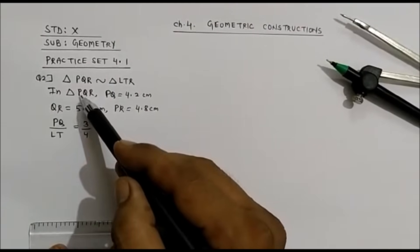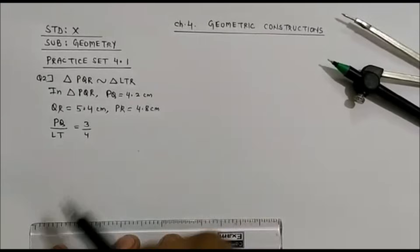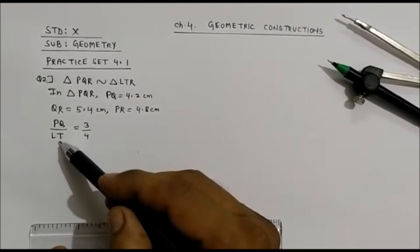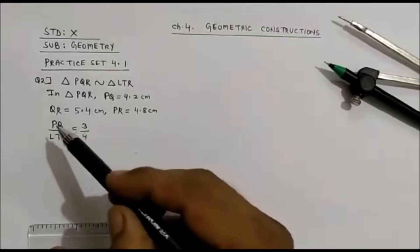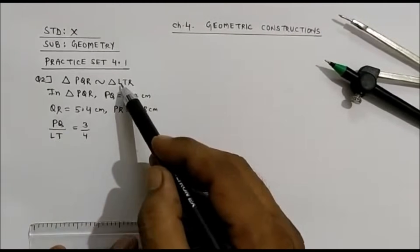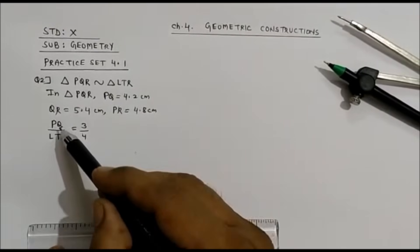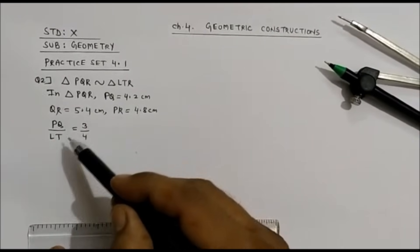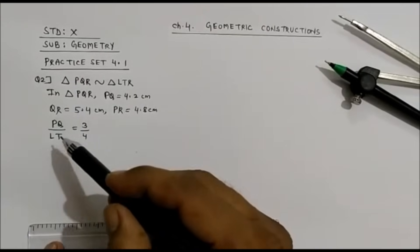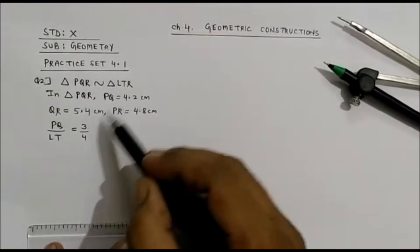PR is 4.8 cm, so we have all measurements of triangle PQR and it can be constructed. Further, the ratio is given: PQ upon LTR is 3 upon 4. These two triangles are similar and the ratio is 3 upon 4, so PQ corresponds to 3 and LTR corresponds to 4. Definitely triangle LTR is a bigger triangle.